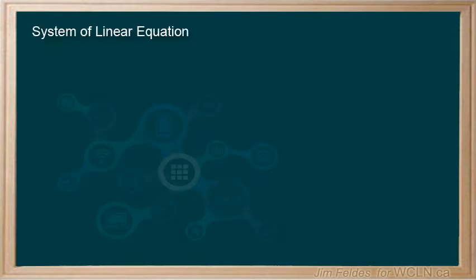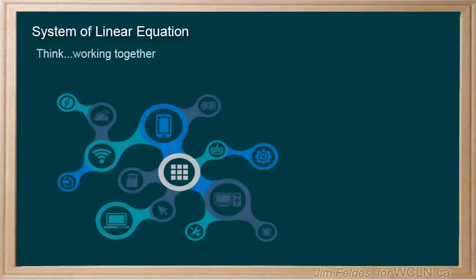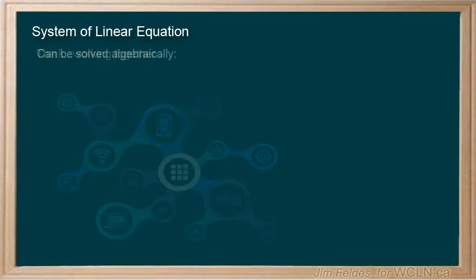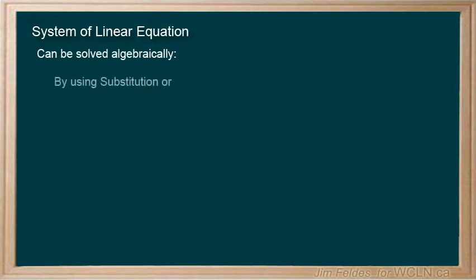Recall from previous work that the term system is used when we have more than one thing working together. With systems of equations, we have the option to solve them algebraically, because the equal sign allows us to substitute out one of the variables, or you can use elimination to find your answer.